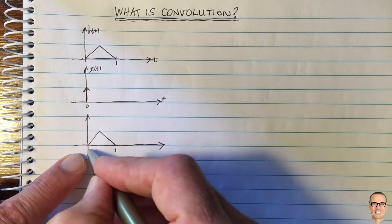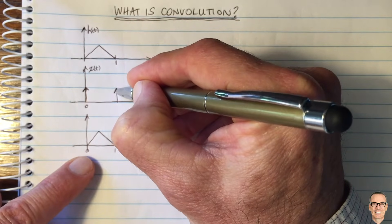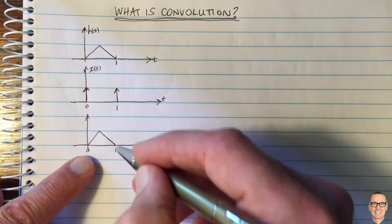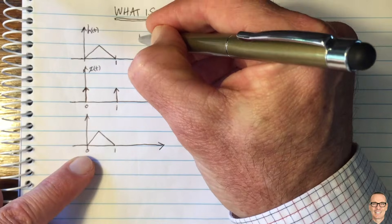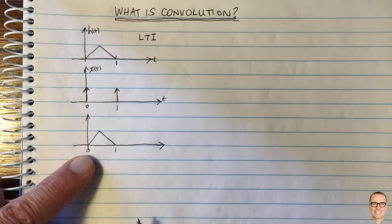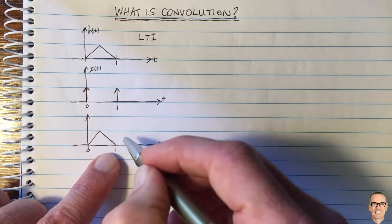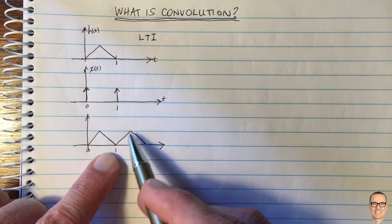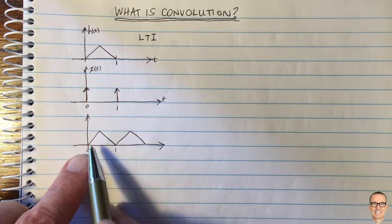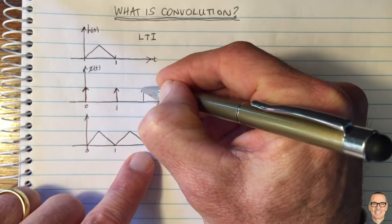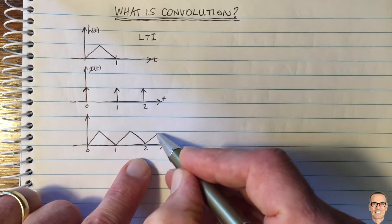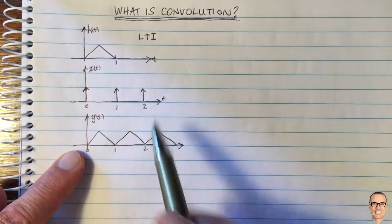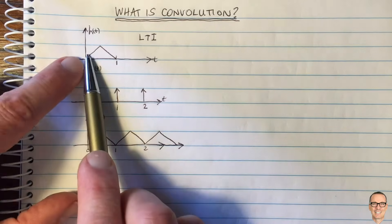Now what happens if we put a second impulse into our system? Let's say we put a second impulse in at time equals one. If this is a linear time invariant system — an LTI system — then when we put a second impulse in, this response is going to happen but it's going to start after that impulse. Because it's time invariant, the response at a later time is the same as the response from the earlier time. If we had another impulse at time equals two we would get another response and so on. So this is the output y(t) of a linear time invariant system given these inputs and this impulse response.